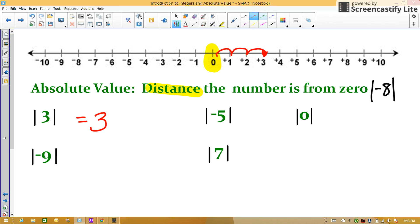Find negative 9 on your number line. How many spaces to zero from negative 9? 1, 2, 3, 4, 5, 6, 7, 8, 9.